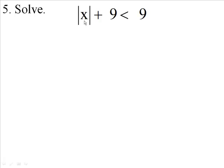Before we can figure out what the absolute value of x is, we have to get rid of this 9 right here, this one. So we're going to subtract 9 from both sides of the equation.